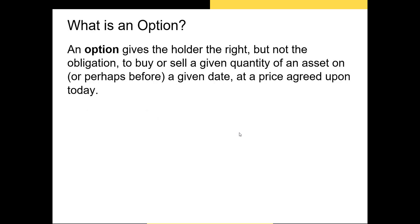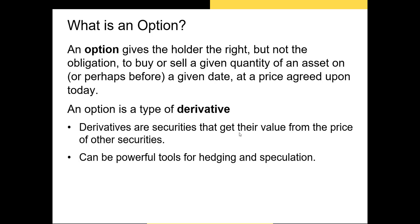So what is an option? Well, as the name implies, an option gives an investor the option to trade some underlying asset. It gives the holder the right but not the obligation to buy or sell a given quantity of an asset on or perhaps before a given date at a price agreed upon today. Options are a special type of asset called a derivative.